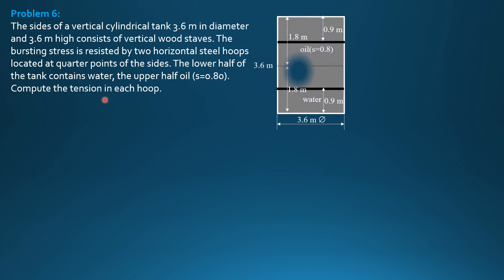Let's have the figure first. These are the two hoops at quarter points of the side. 3.6 divided by 4, so 0.9 from its end. Then it contains water, half filled for the lower half, then the upper half is oil of specific gravity 0.8.